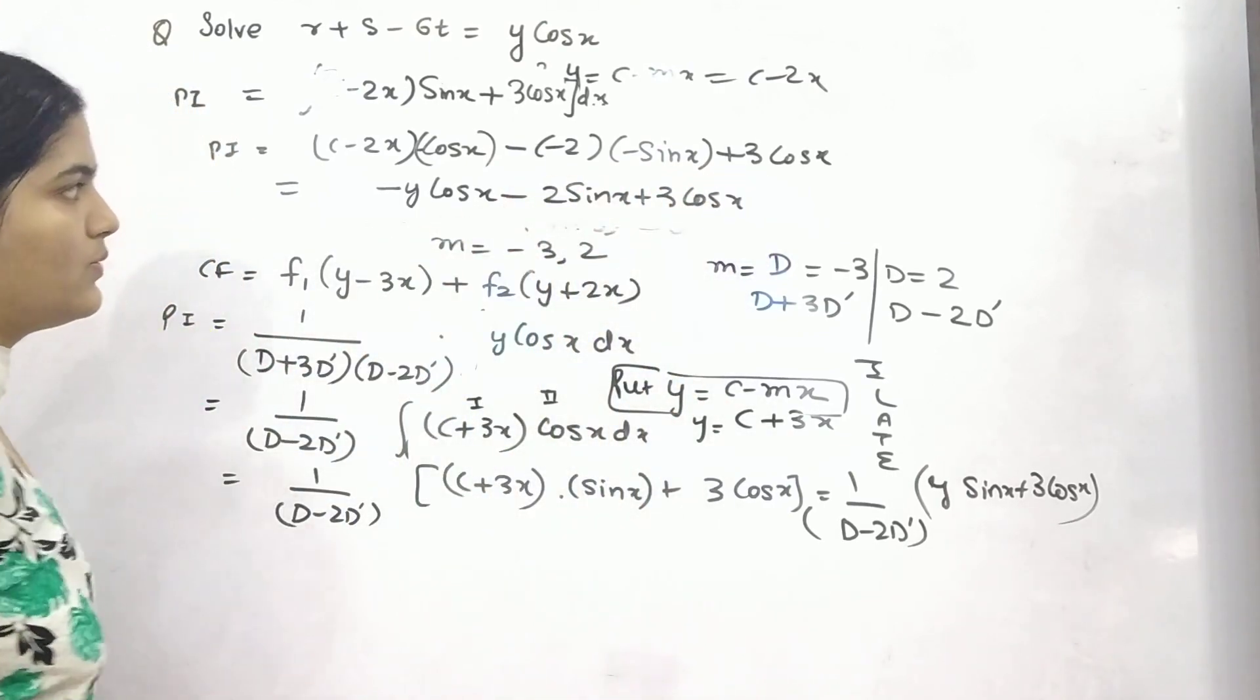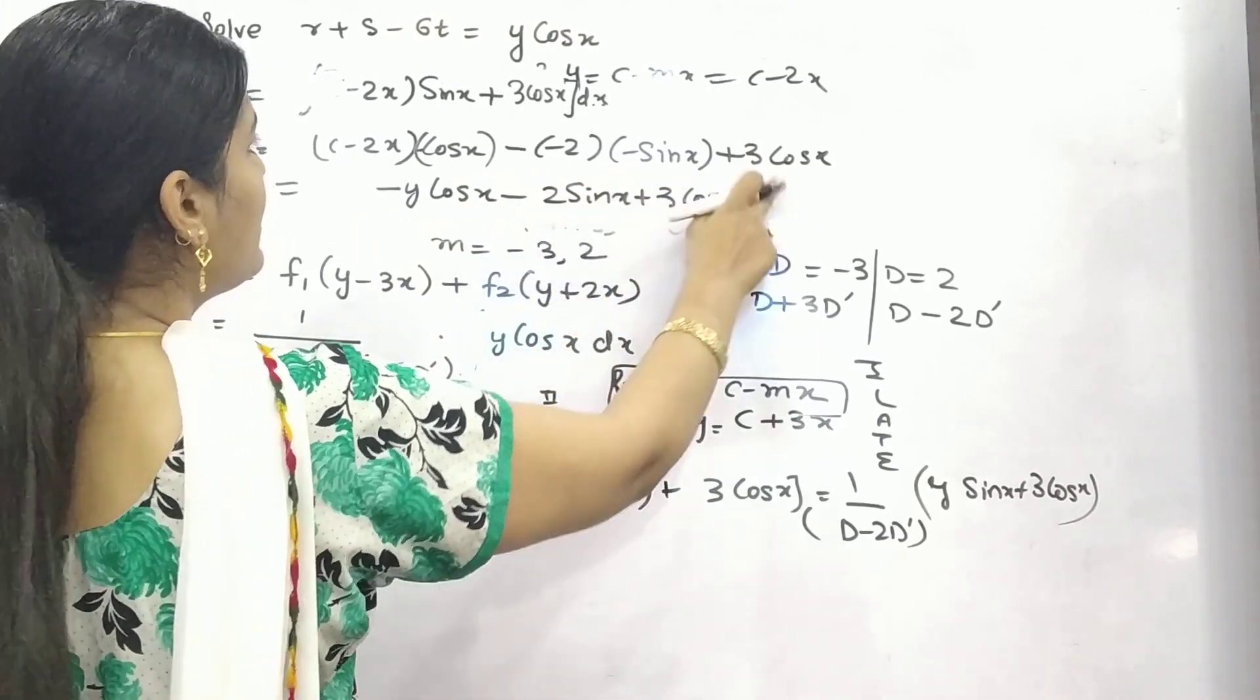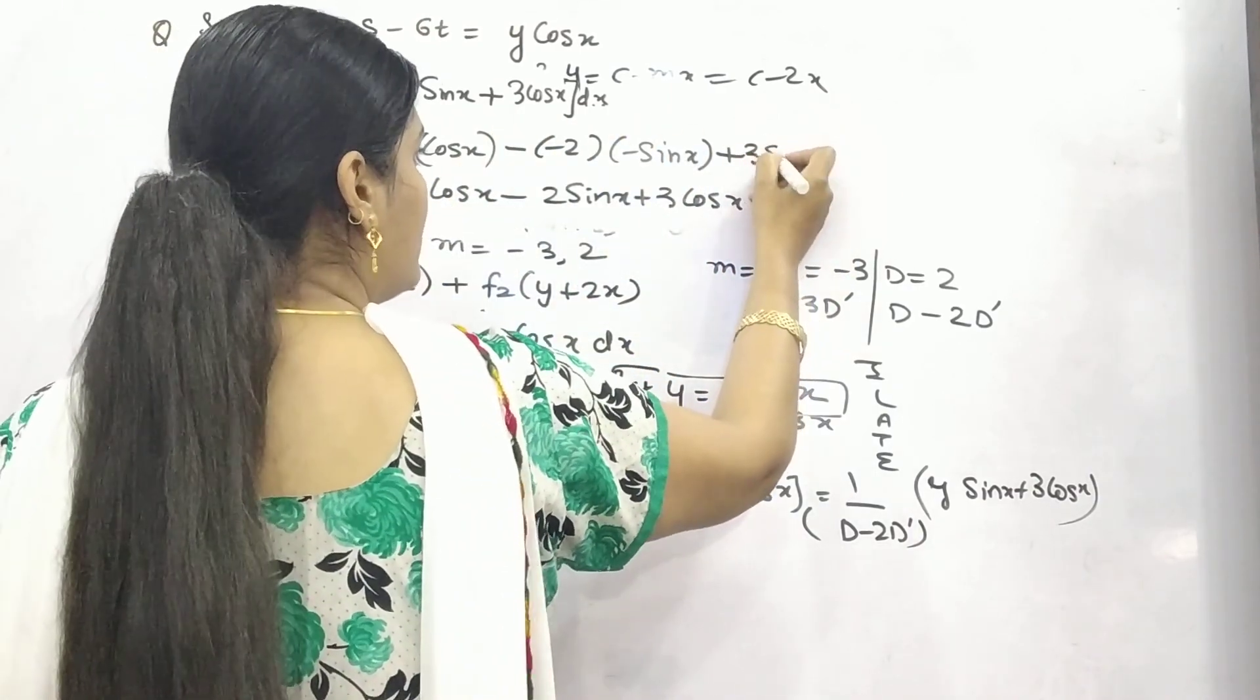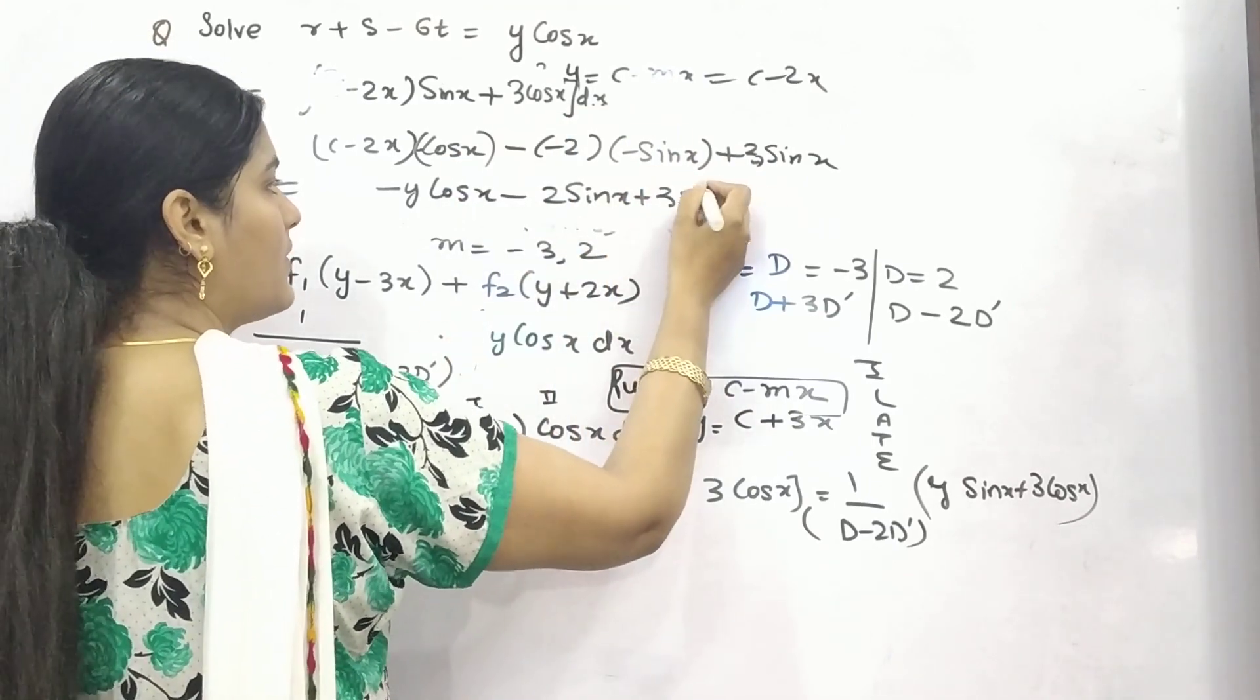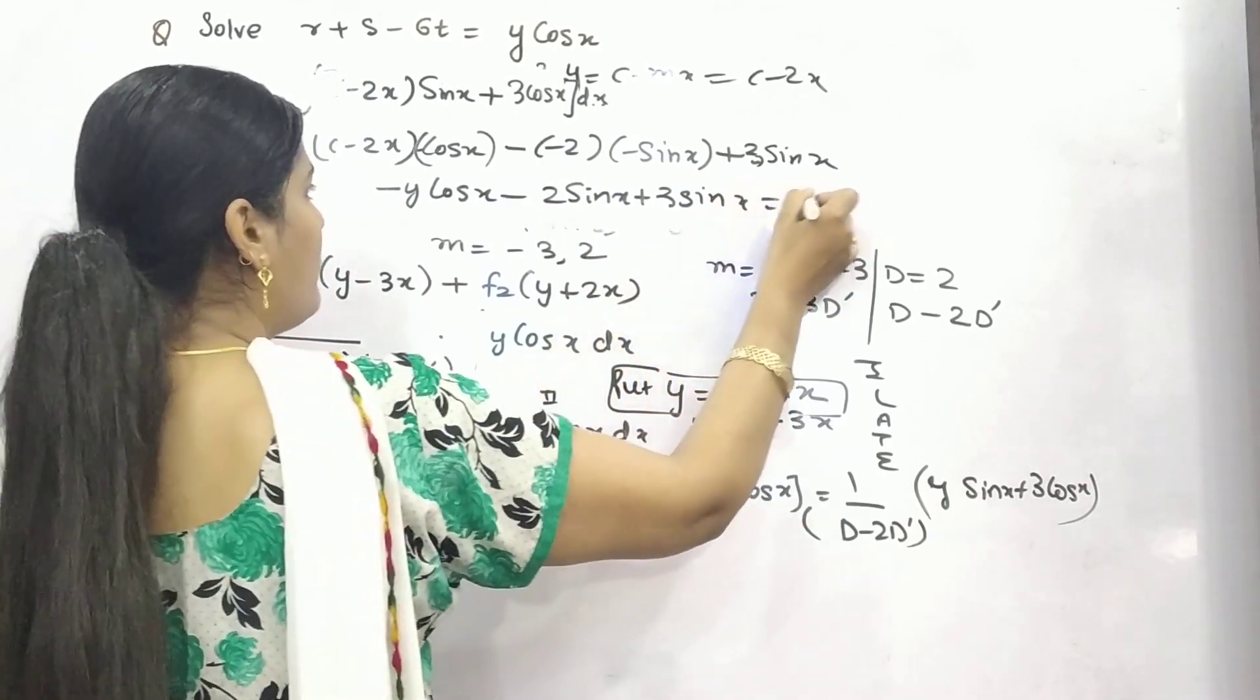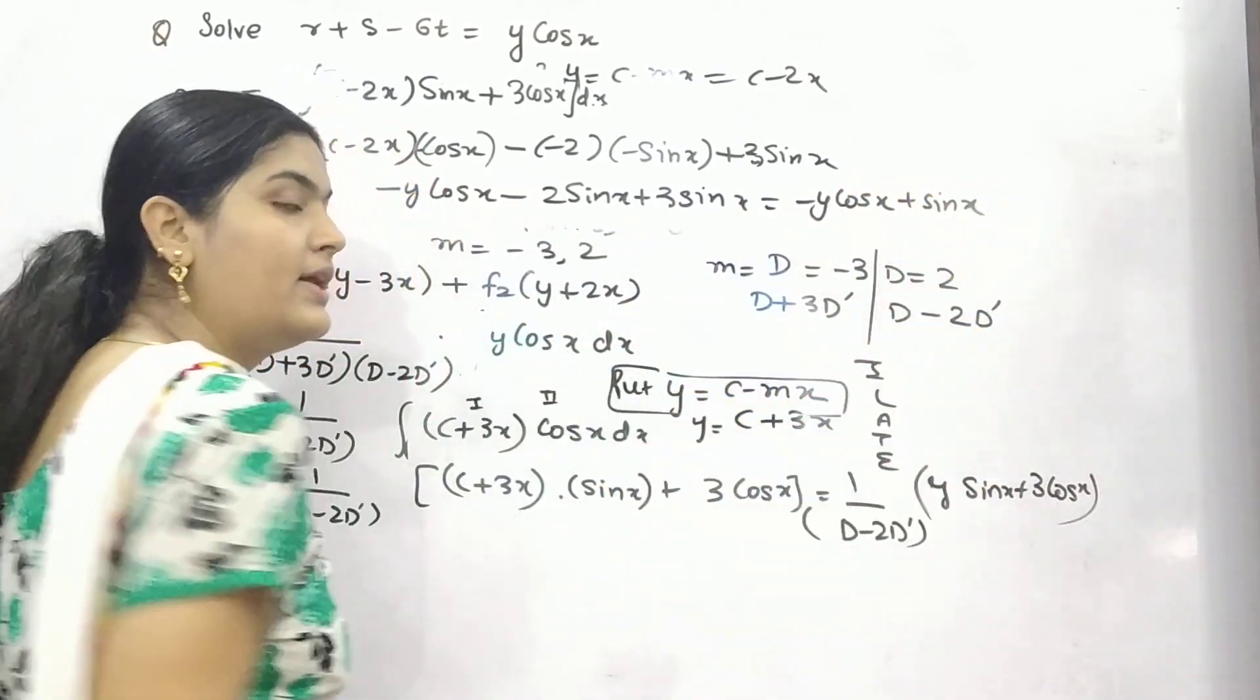This is your particular integral. You can again put c - 2x as y. So minus y cos x, minus minus plus, plus minus minus 2 sin x, plus 3 cos x. 3 - 2 and you can see here -2 sin x. Integration of cos is sine. 3 - 2 is 1 sine. So you have got your particular integral as -y cos x + sin x.